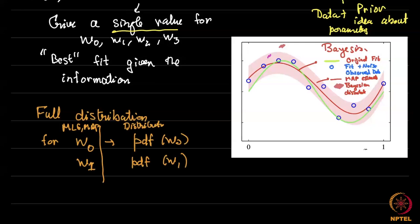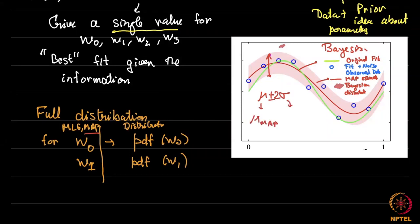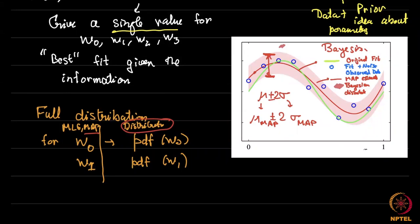Once you give the full distribution, instead of having just one value you have a range of values — say the mean value (which is the MAP value) plus or minus sigma, or plus or minus 2 sigma. This is sort of the shortcut: we get the MAP mean and sigma and draw this range, acknowledging that the parameters lie within a range rather than at a single point. In MLE or MAP, you give just one value; in Bayesian, you give the full distribution.